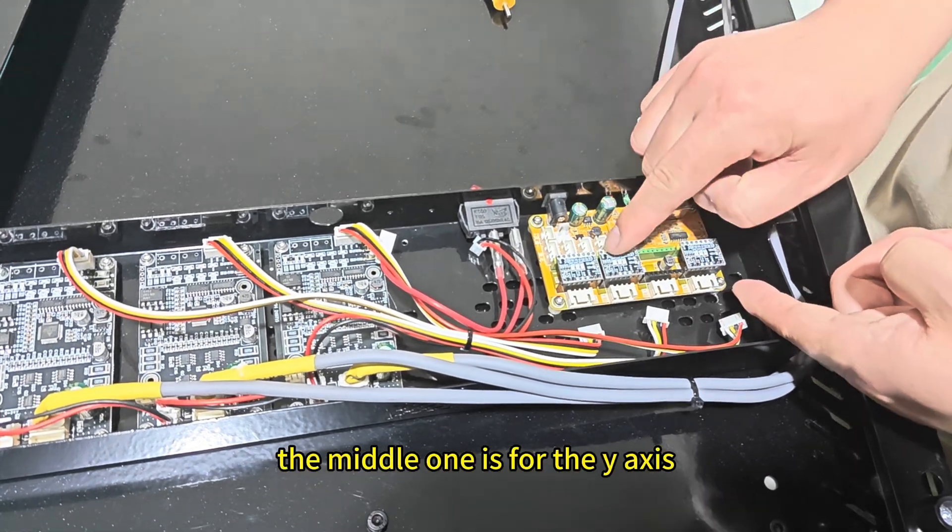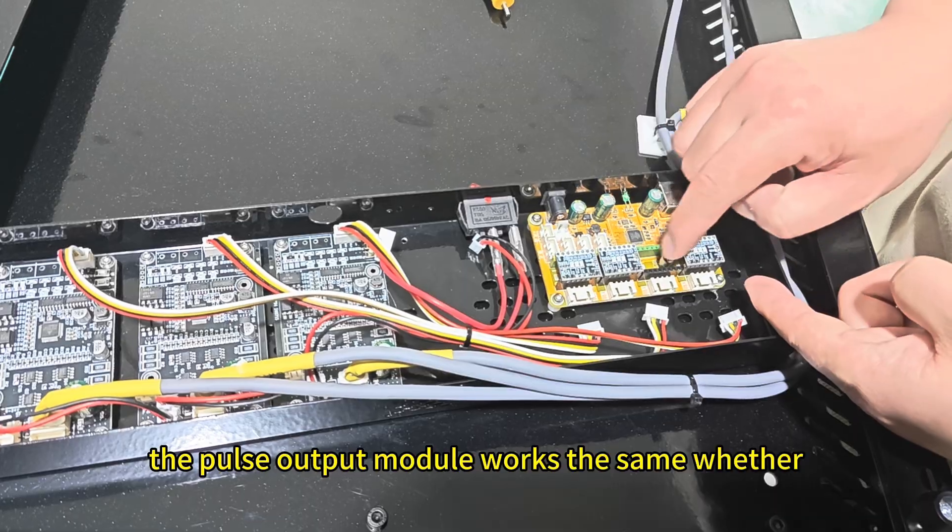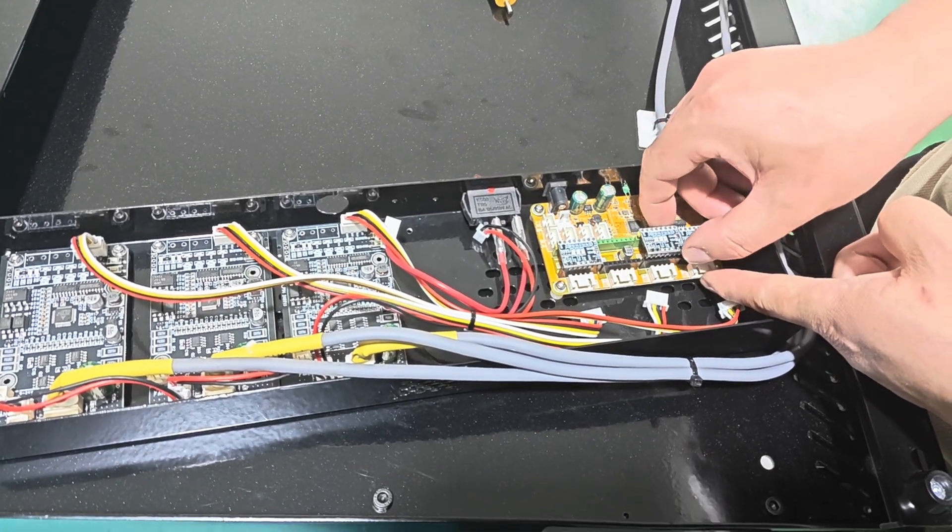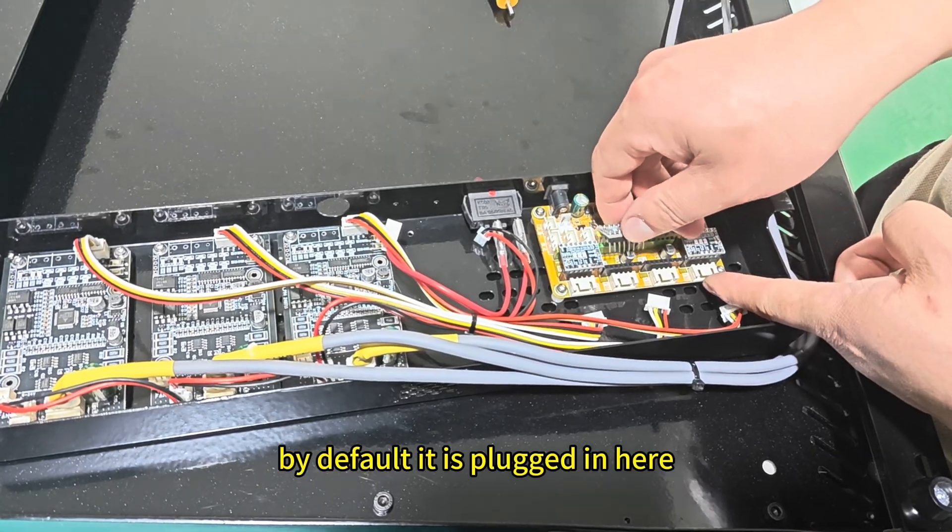The middle one is for the y-axis. The pulse output module works the same whether it's plugged in here or there. By default it's plugged in here.